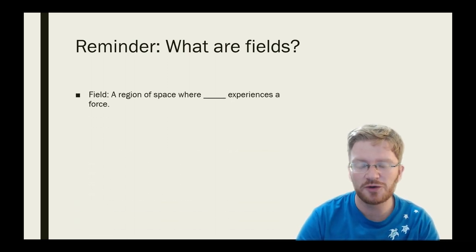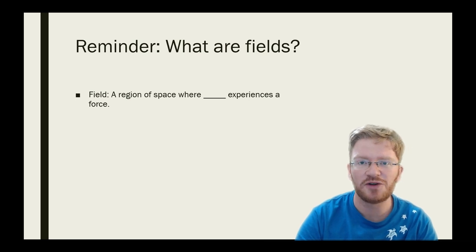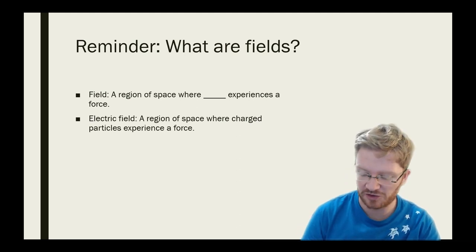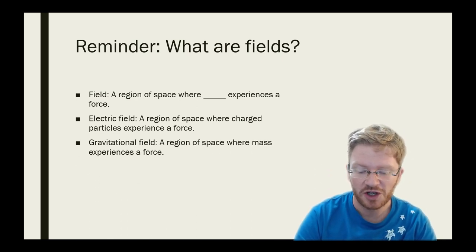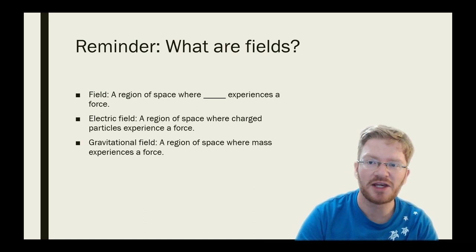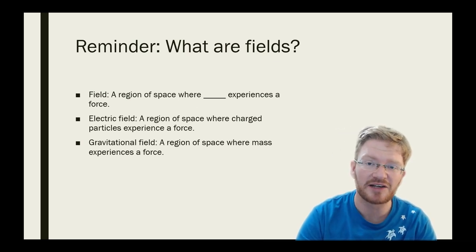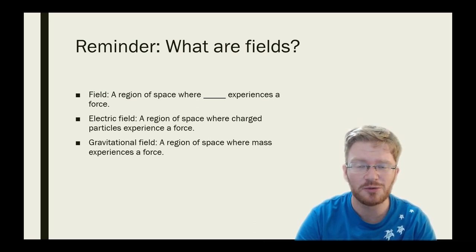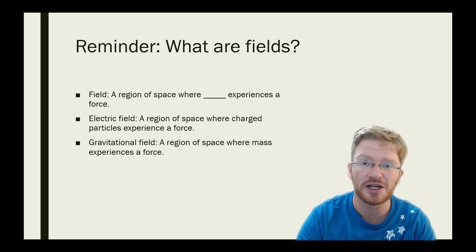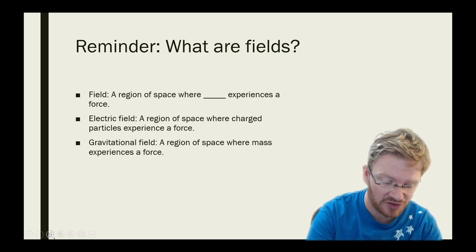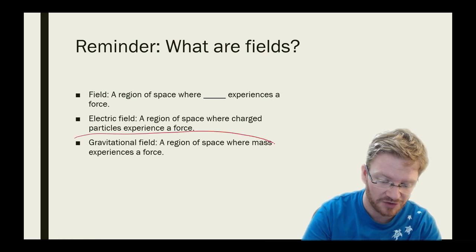We are dealing with gravitational fields in this topic, so it's worth just reminding ourselves what that means. A field is a region of space where something experiences a force, and at A-level physics there are two main fields that you are probably going to be worrying about. The first is an electric field — that is a region of space where charged particles experience a force — and we're going to be dealing today with gravitational fields. Gravitational fields are a region of space where mass experiences a force. We also deal with magnetic fields, which are regions of space where a magnetically magnetic object experiences a force, and there are other fields as well that we'll get into when we do some of the waves and the nuclear topic.